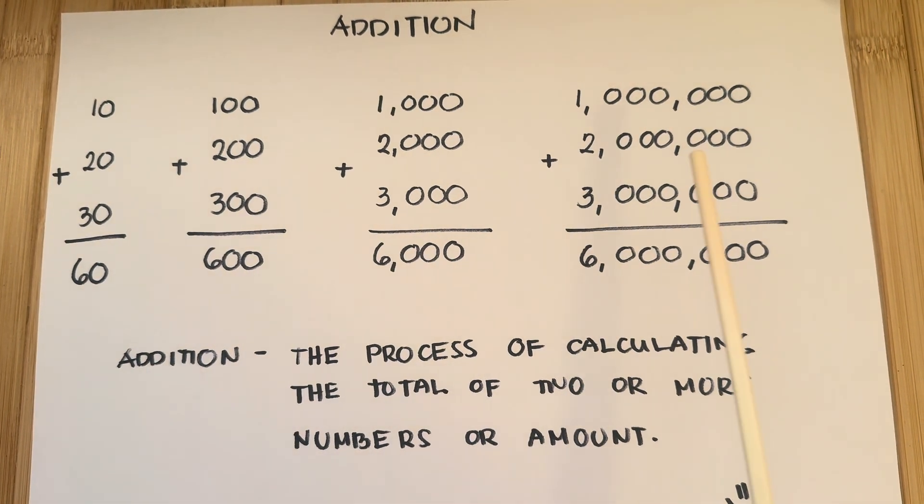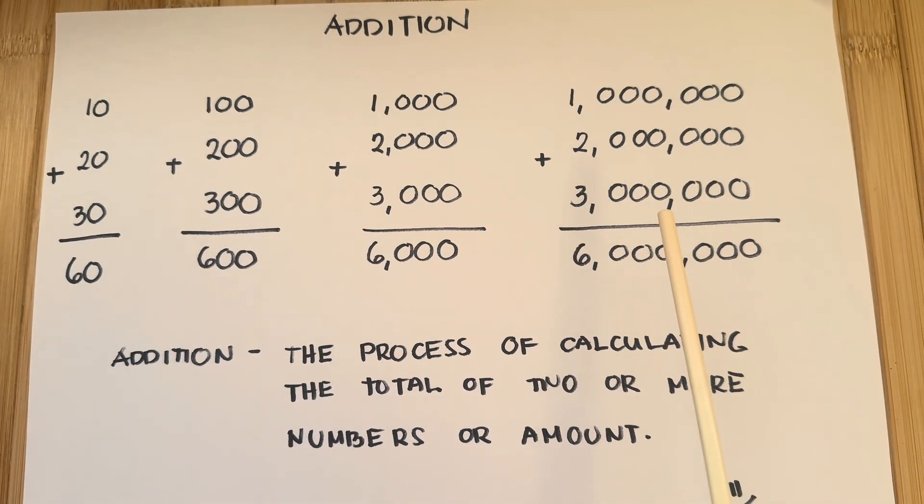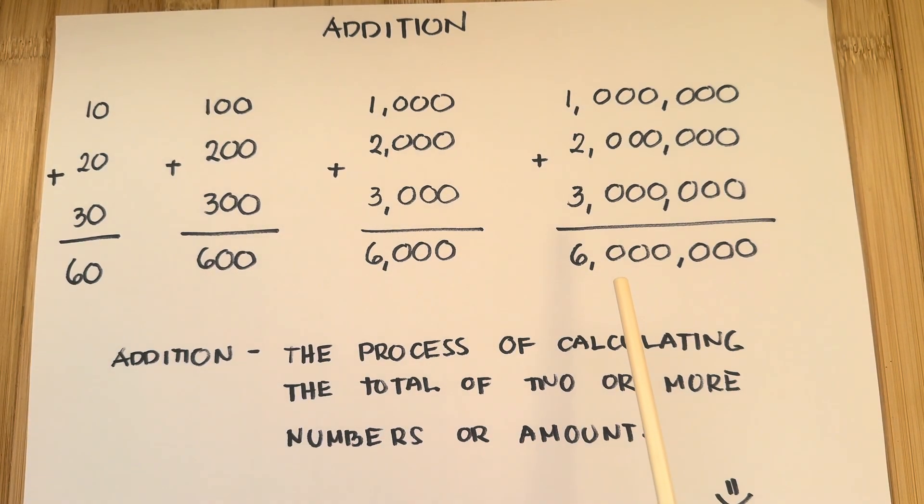Lastly, 1,000,000 plus 2,000,000 plus 3,000,000 equals 6,000,000.